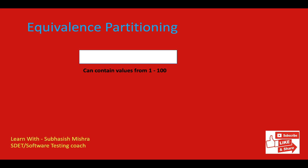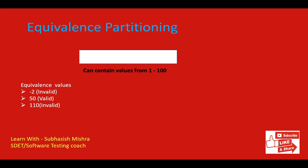Using equivalent partitioning, we can reduce the number of test cases and still get good coverage. Taking the same text box that accepts values from 1 to 100: if I pass minus 2, it's invalid and should not be accepted. If I pass 110, it's also invalid. But 50 is a valid value. We divide inputs into two groups — invalid and valid — and pass values accordingly. If the system doesn't accept minus 2, we know it won't accept minus 3, minus 4, or minus 5 either.